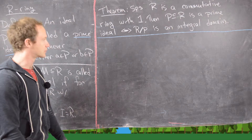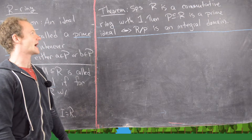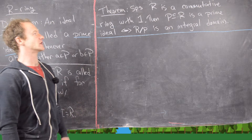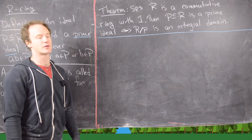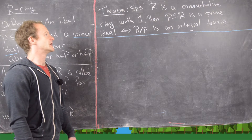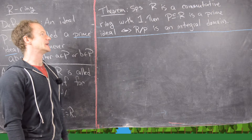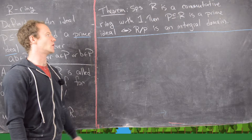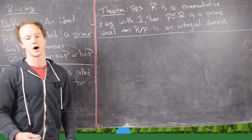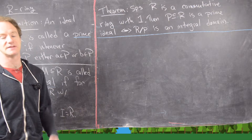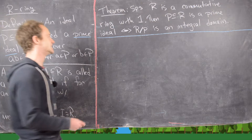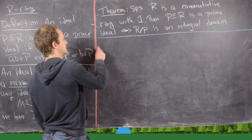The first result we're going to prove, which is really classic, says that if you have a commutative ring with 1, then P is a prime ideal if and only if R mod P, that quotient ring, is an integral domain.